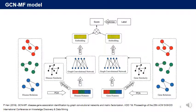Before showing my model, let's look at the GCN matrix factorization model. This model increased its predictive performance by using GCN for disease-gene association prediction. However, due to a small amount of learning data and over-smoothing of GCN, only one layer was used.